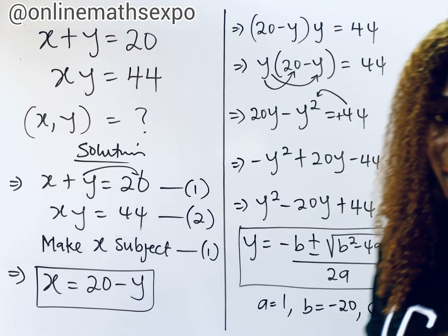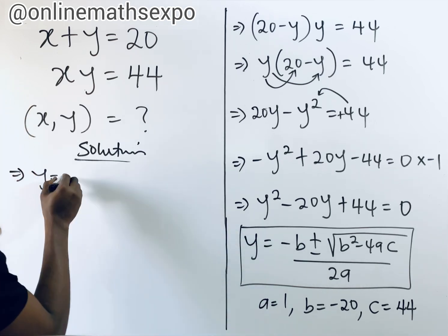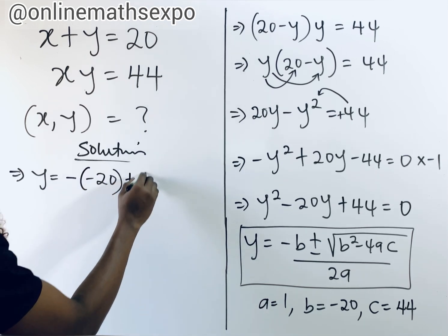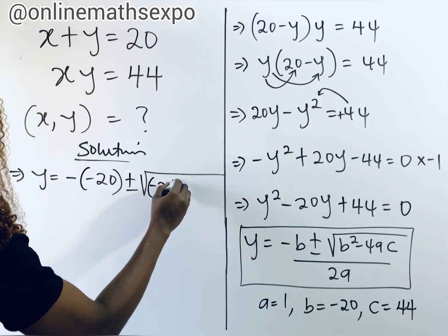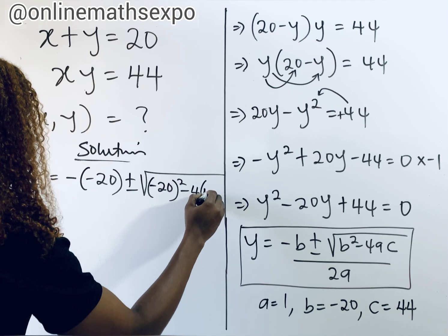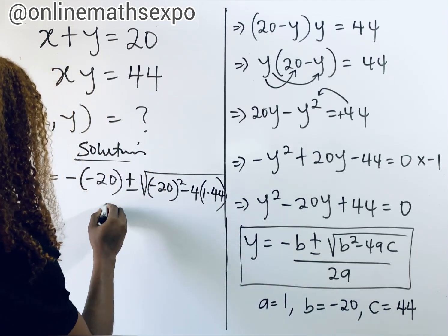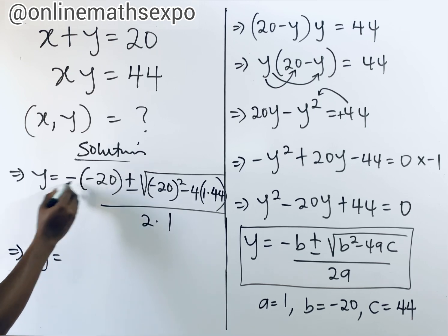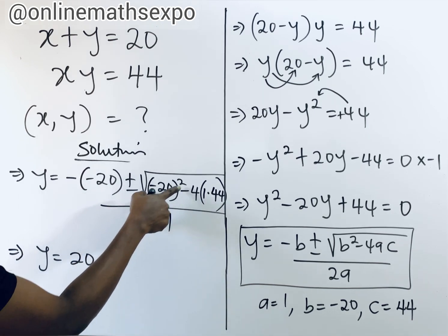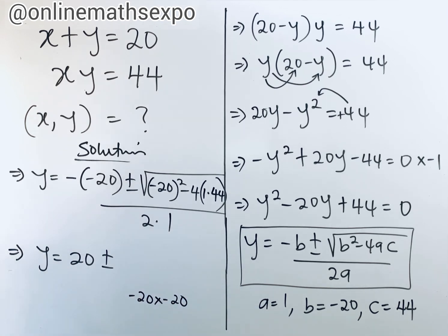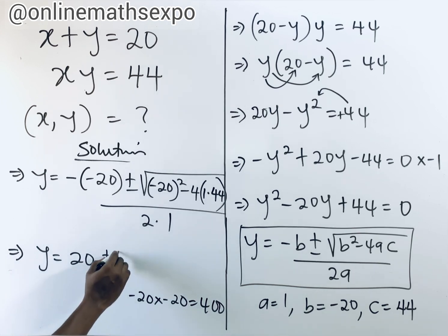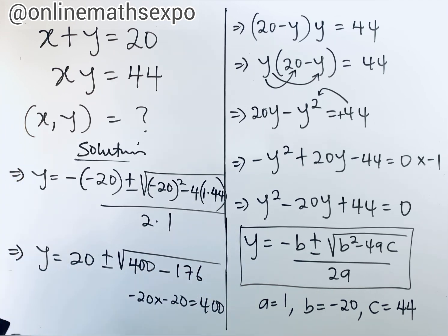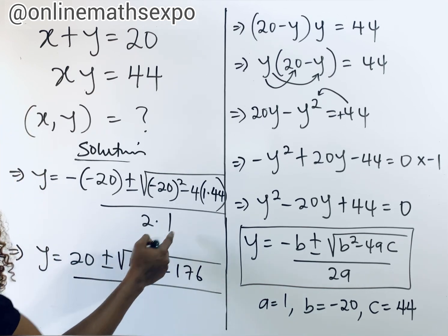Plugging into the formula, we have y equals negative b — and since b is negative 20, we put it in brackets — plus or minus the square root of (negative 20) squared minus 4 times 1 times 44, divided by 2 times 1. Simplifying: negative of (negative 20) gives us positive 20. (Negative 20) squared gives us positive 400. And 4 times 1 times 44 gives us 176. So we have the square root of 400 minus 176, divided by 2.